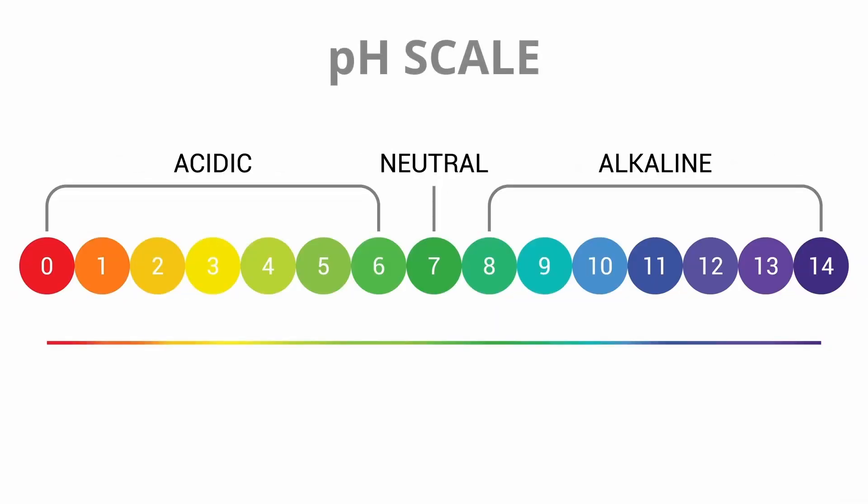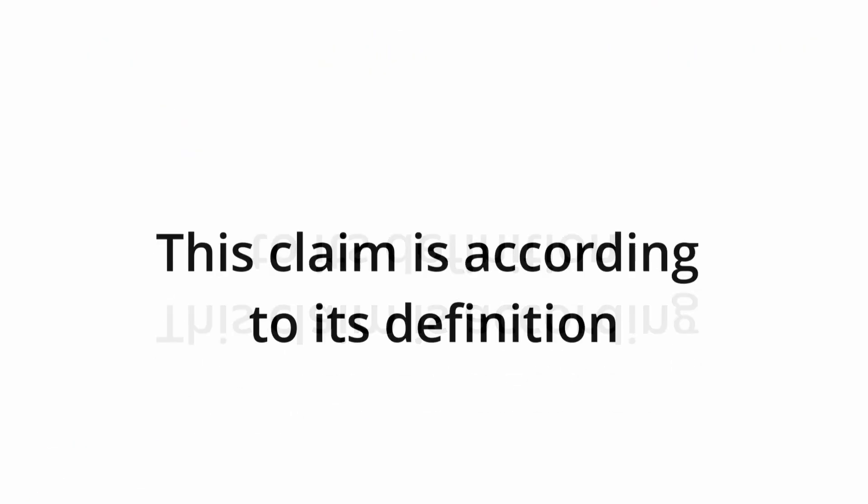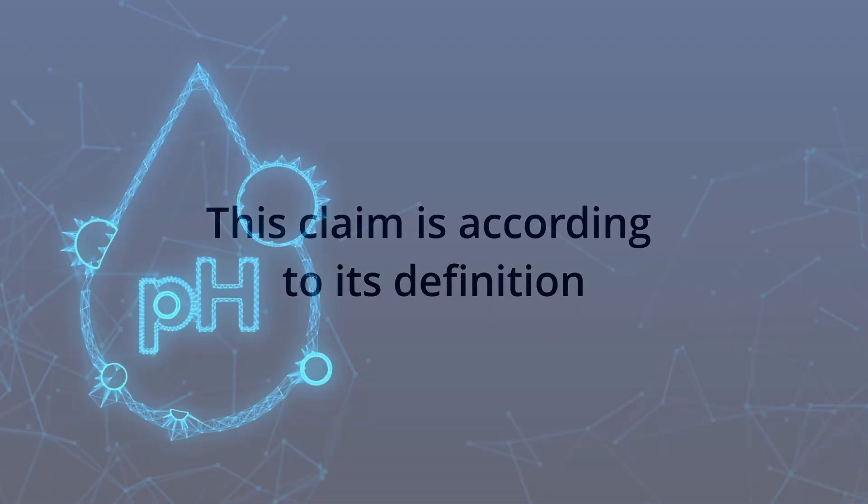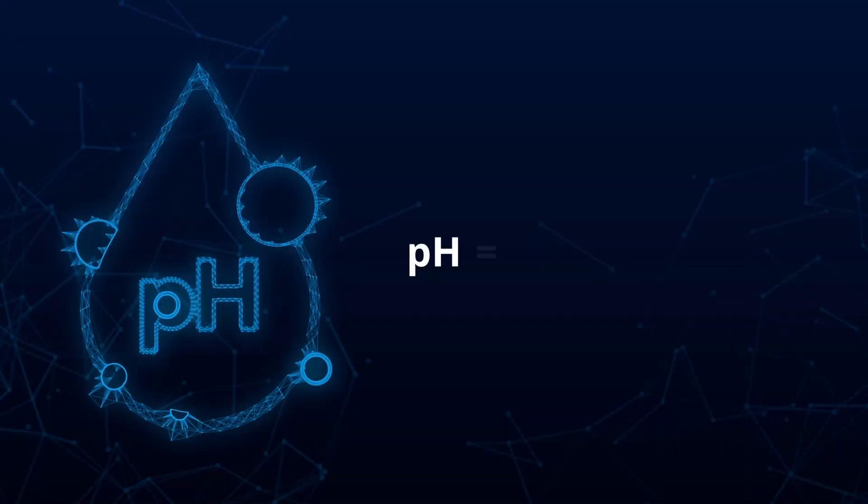Theoretically speaking, the pH scale should range from negative infinity to positive infinity. This claim is according to its definition, which states that the pH of a substance is the value defined by the negative logarithm of the hydrogen ion concentration.